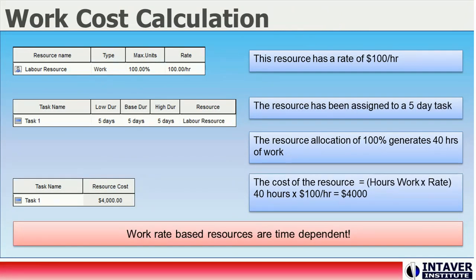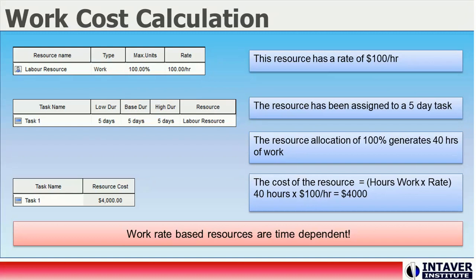Work is the fundamental unit of the time-dependent cost calculation, and is a function of the resource allocation. Resource units indicate the level of allocation, or the percent of the activity duration that the resource will be working on an activity. For this discussion, we are using the commonly used fixed unit task type, which keeps resource allocations fixed and recalculates work if duration is modified. In this example, we can see how the base cost for a resource assigned to a task is calculated. If we lowered the max units to 50%, the work performed by the resource over the same period would be reduced to 20 hours at a cost of $2,000. If the duration changes, work and therefore resource costs are adjusted accordingly — allowing resources to model time-dependent costs.